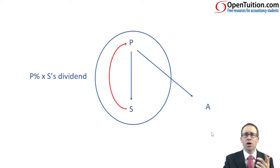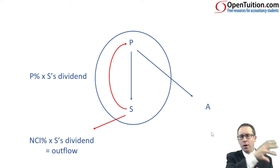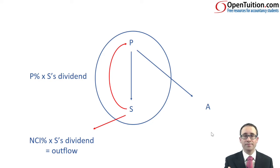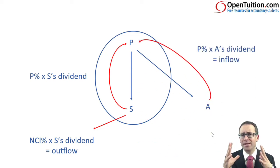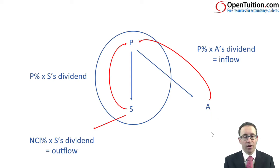However, if S is not a wholly owned subsidiary, then the non-controlling interest will get their share of that dividend. So there is a cash flow between the group and those outside — there will be an outflow based upon the non-controlling interest's share of S's dividend. If the associate declares a dividend, P records its share, and that is an inflow. So: the dividend paid to the non-controlling interest is an outflow; the dividend received from the associate is an inflow.